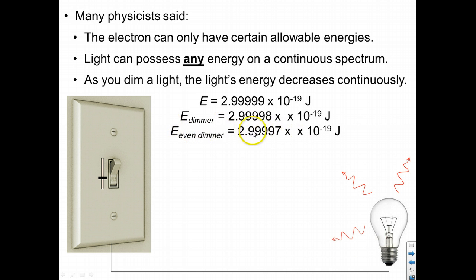And the even dimmer light has a smaller energy, which is infinitesimally smaller than what it was before, assuming we barely moved this down.